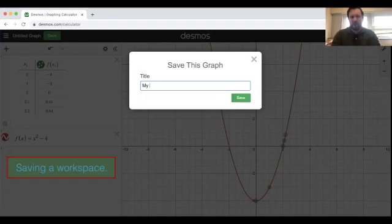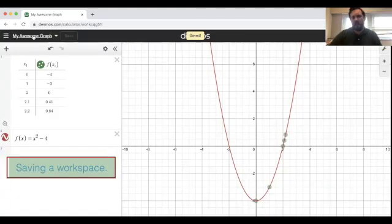So I'm going to call this my awesome graph. When I click save, it's saved. And you see now it has the title.